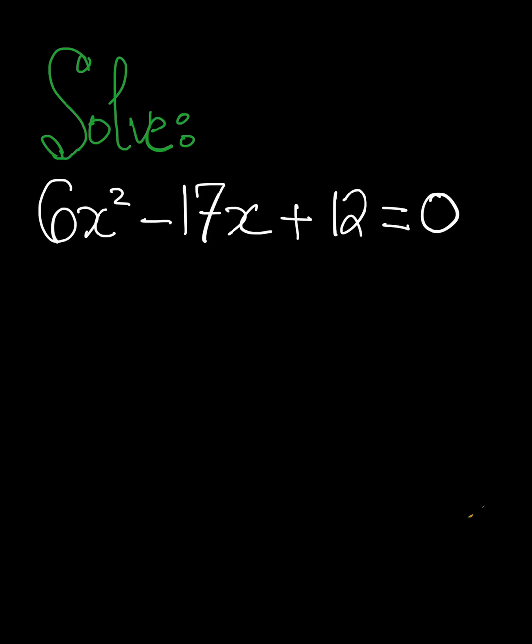Hello, and welcome back again to our channel, Tutoring Made Easy. In this video, we're going to learn how to solve this quadratic equation, which is 6x² - 17x + 12 = 0.